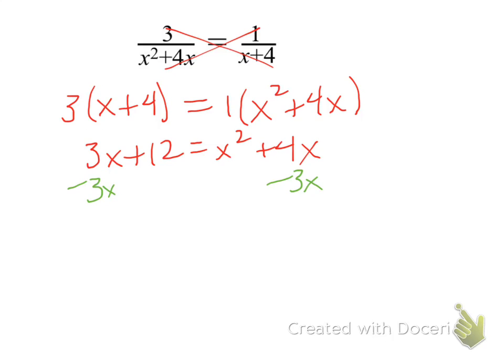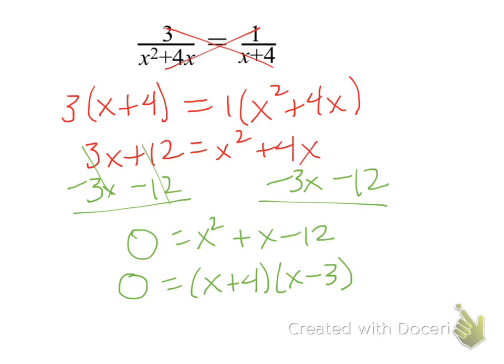We're going to get everything over to the same side of the equation. So subtracting the 3x and subtracting the 12, we're left with 0 on the left-hand side. Then we have x squared plus x minus 12. And when we factor this, we're going to get x plus 4 and x minus 3. So when we solve these, we're going to get x equals negative 4 and x equals positive 3.